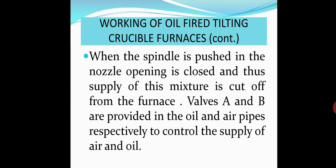Valves A and B are provided in the oil and air pipes, respectively, to control the supply of air and oil. Once the spindle is pushed in the nozzle, these valves closes the flow of air and oil, respectively.